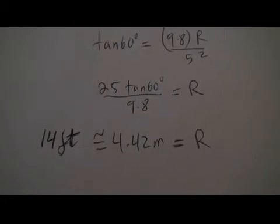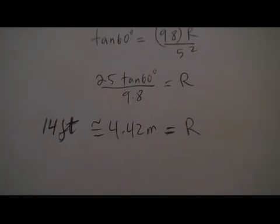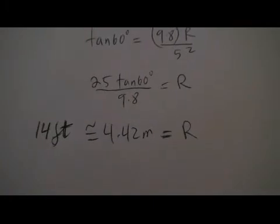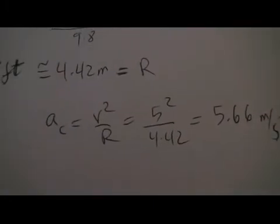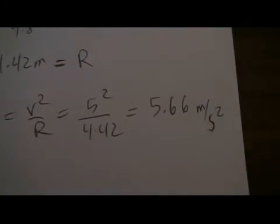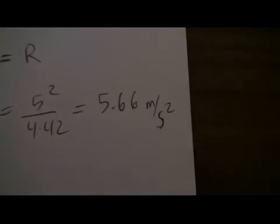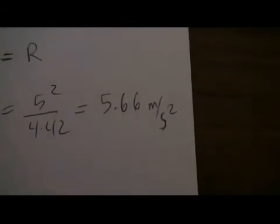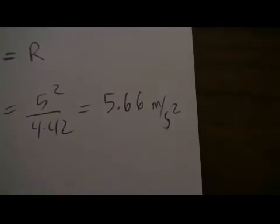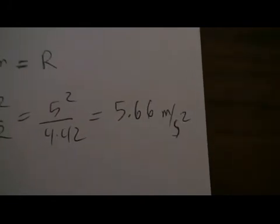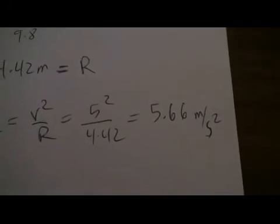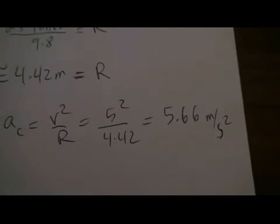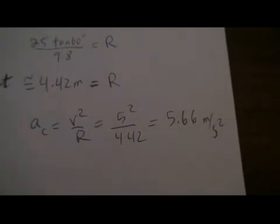From here I could also calculate what was my centripetal acceleration of the car. So when I put the equation a_centripetal is v² over r, 5² over 4.42, I get 5.66 meters per second squared, which is less than the acceleration and deceleration of the car. Okay, so you could see how this method could be used in different kinds of situations. Thank you.